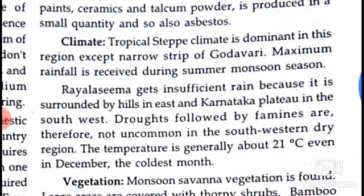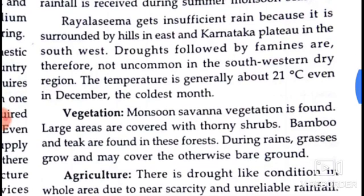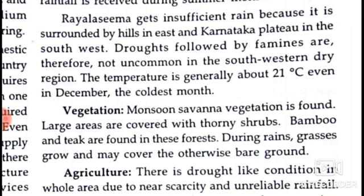Tropical steppe climate is dominant in this region except in a narrow strip along the Godavari. Maximum rainfall is received during the summer monsoon. Rayalaseema gets insufficient rain because it is surrounded by hills in the east and the Karnataka plateau in the south and west. Droughts followed by famines are therefore not uncommon in this southwestern dry region.